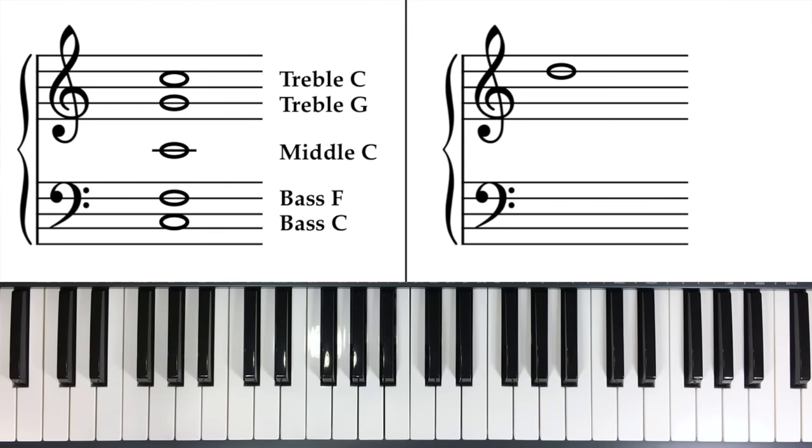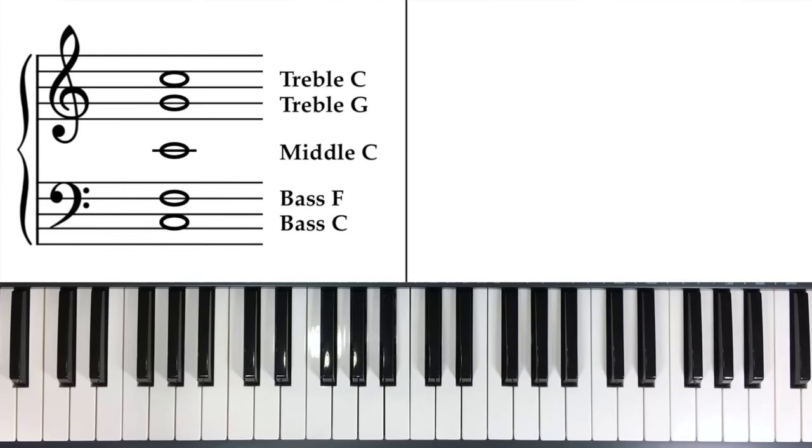So what is this note? Well, it's above C, right? So it's a D. What is this note? It's below C, so it's a B. And if you wanted to go even lower, what's this note? Well, it's just two notes below C, so it's an A. A, B, C, right? C, B, A.